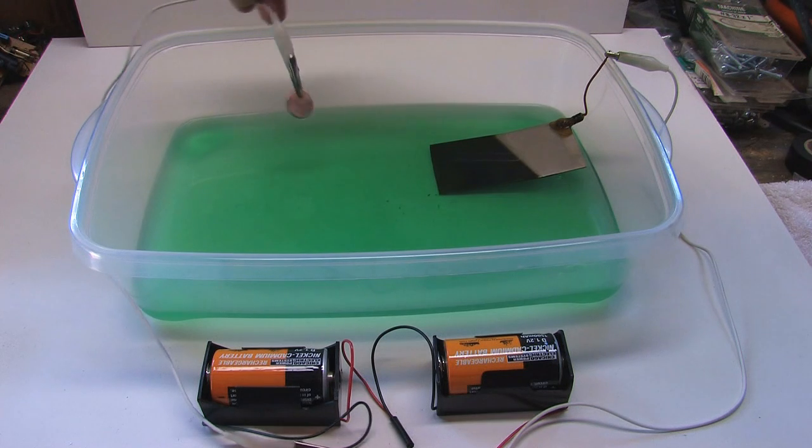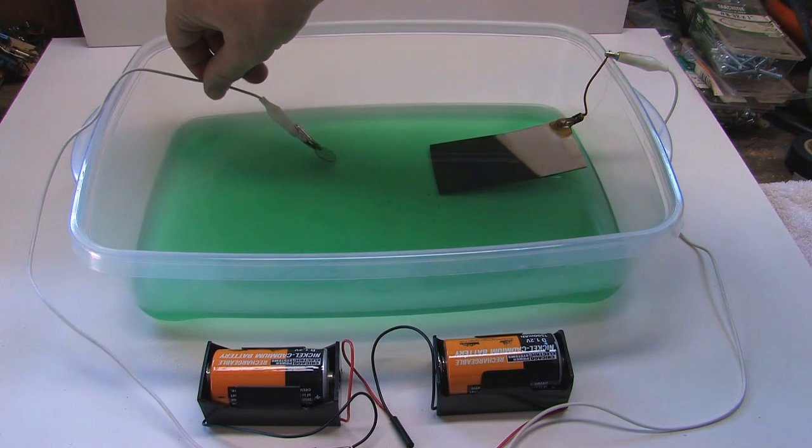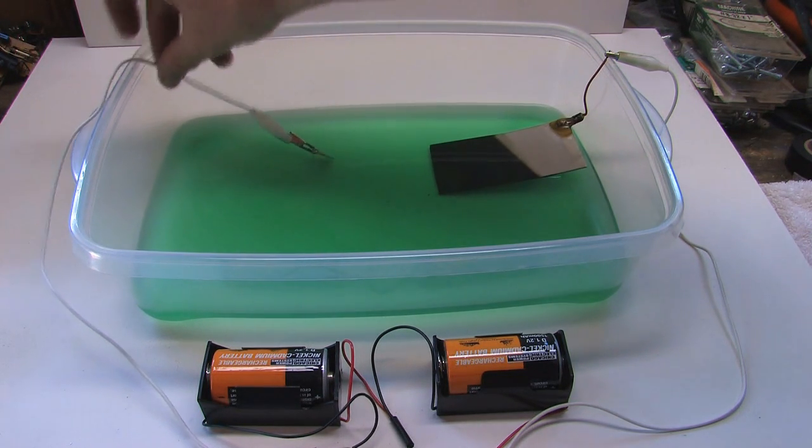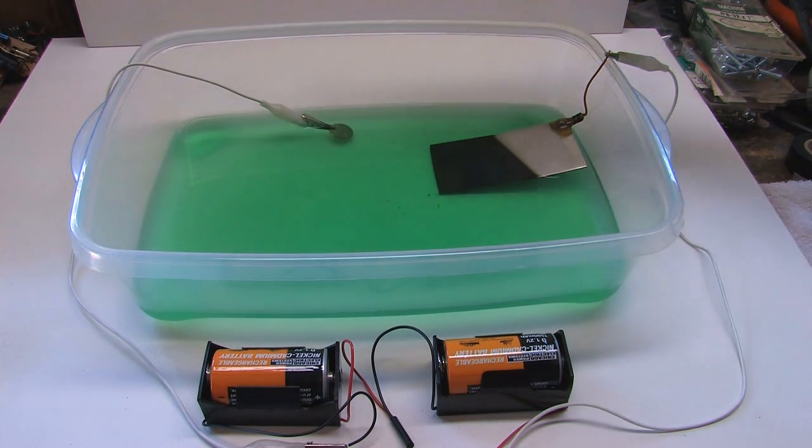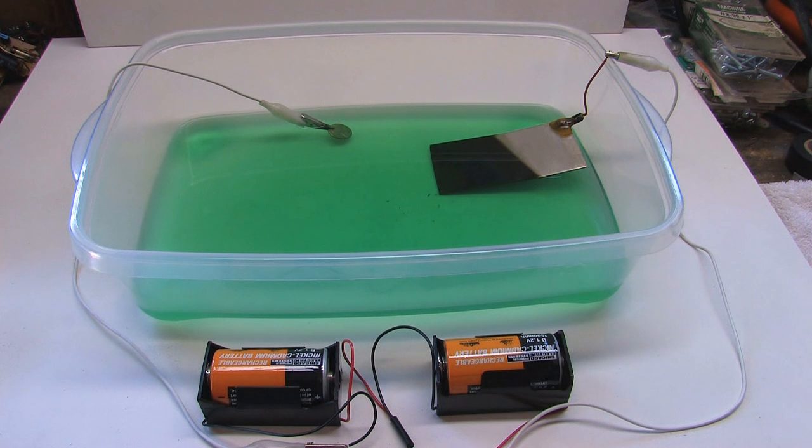See how it's getting shiny. Now with nickel, when you nickel plate something like copper, steel plates really well as well. And when you nickel plate it, it's really looking shiny and good. It'll be a bit dull until we buff it later. And this test already looks to me like we're going to have a really good plate.